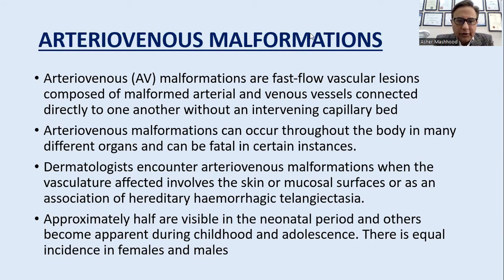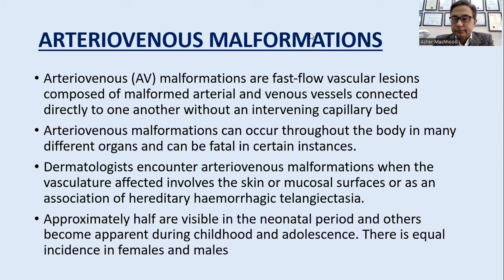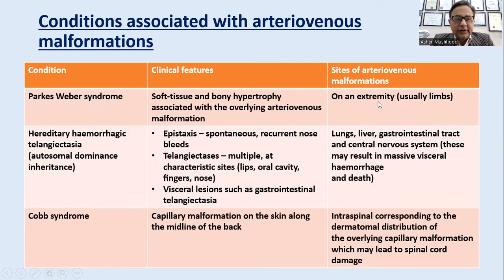Dermatologists encounter arteriovenous malformations when the vasculature involves the skin or mucosal surfaces, or as an association of hereditary hemorrhagic telangiectasias. Approximately half are visible in the neonatal period and others become apparent in childhood and adolescence, with equal incidence in females and males. Associated conditions include Parkes Weber syndrome — soft tissue and bony hypertrophy with arteriovenous malformation usually on the extremities — and hereditary hemorrhagic telangiectasias, an autosomal dominant condition.